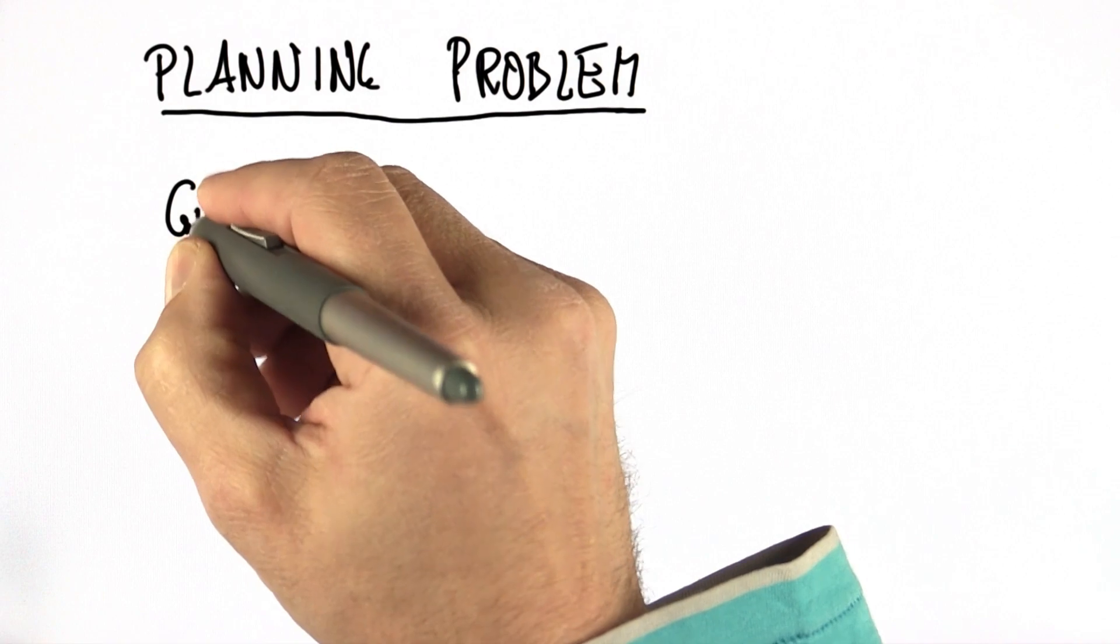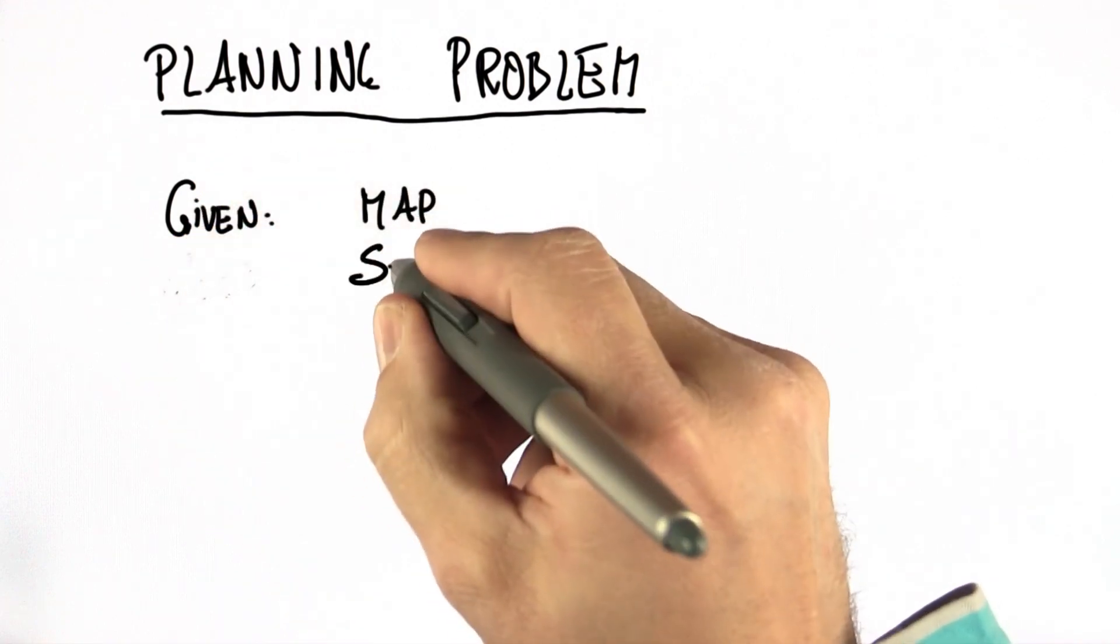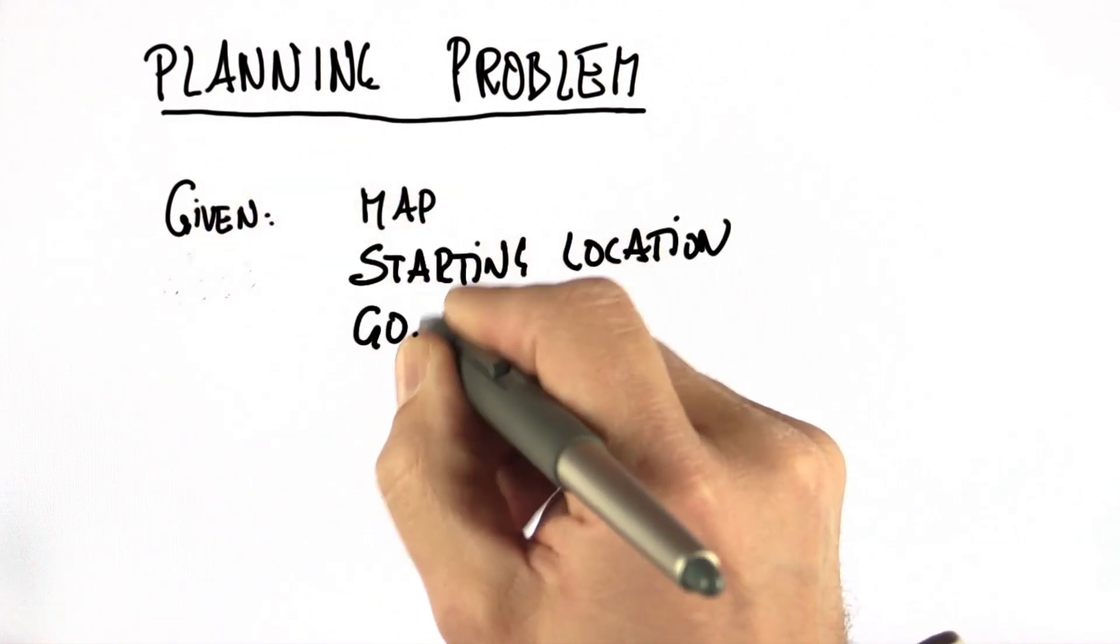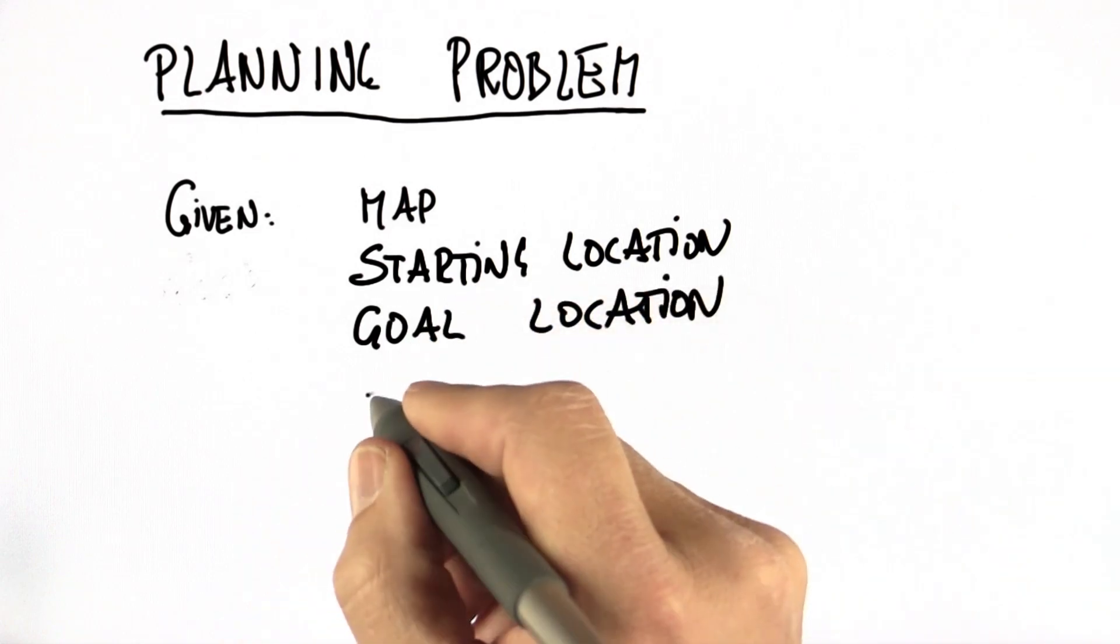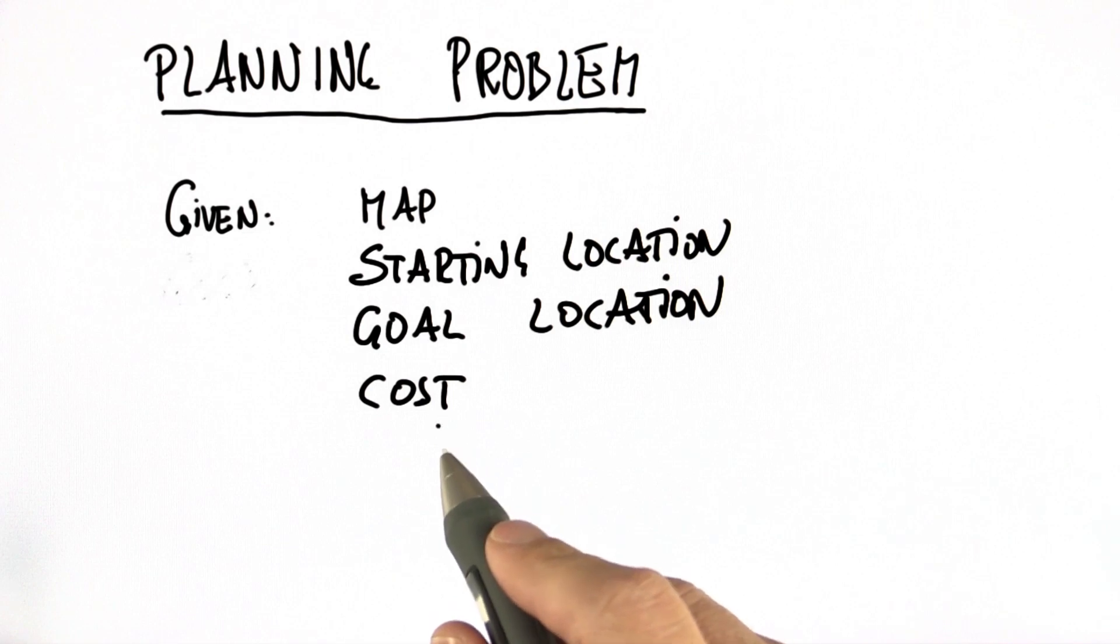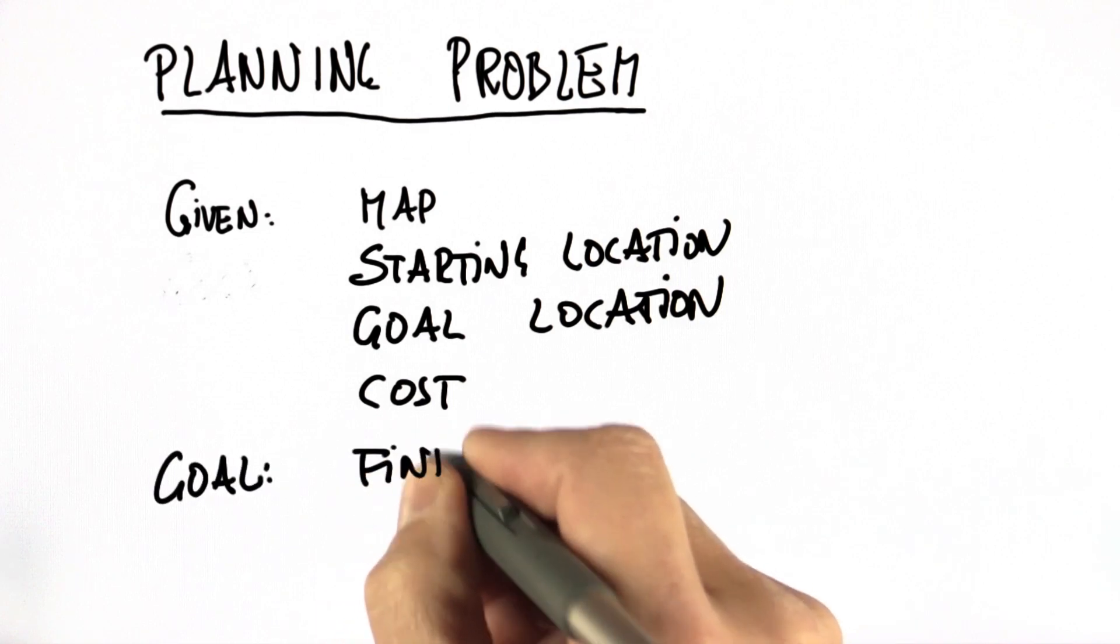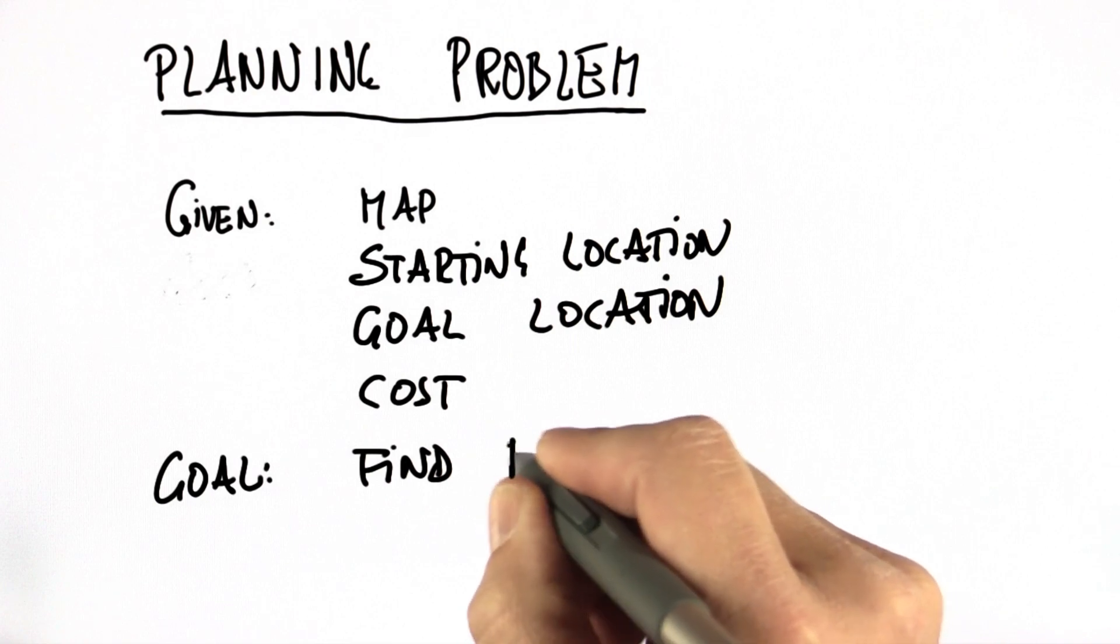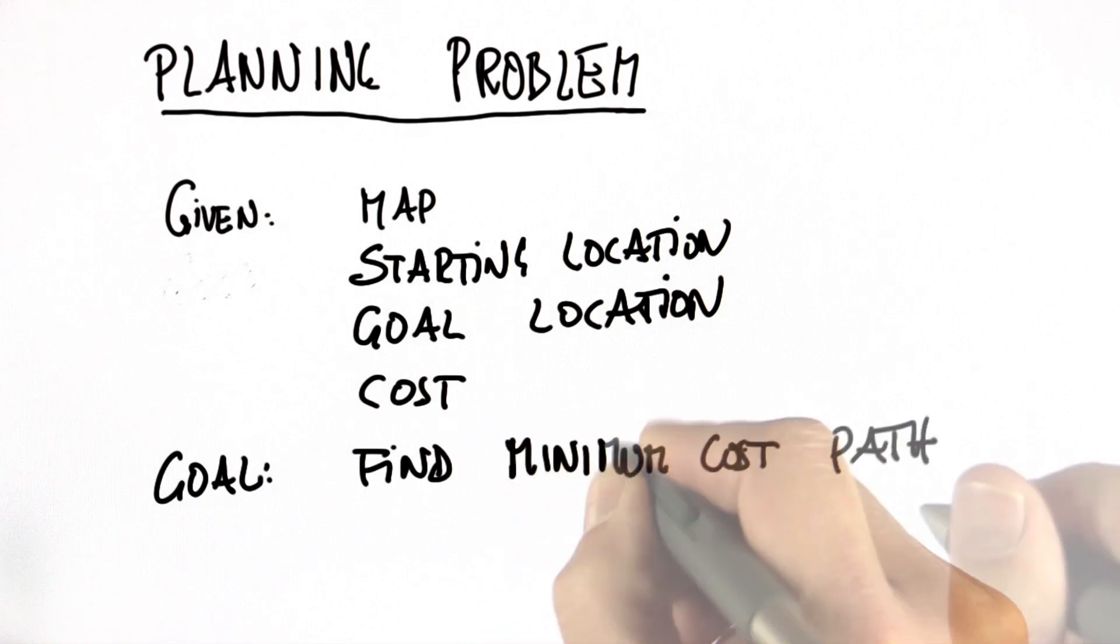We're given a map of the world. We're given a starting location. We're given a goal location. And usually we're given some sort of a cost function. In the simplest way, think of cost just the time it takes to drive a certain route. And the goal is, find the minimum cost path. So before we program anything, let me see if I can ask you a couple of questions for minimum cost paths.